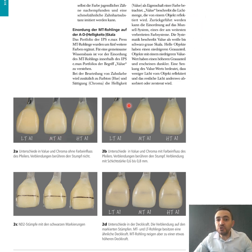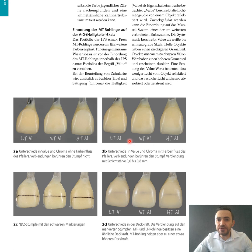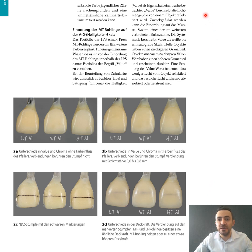In figure 2b, I pushed down those veneers to touch the stump completely, which is obviously a simulation of veneer insertion in the mouth. Now note the difference in brightness and chroma with the influence of the stump color from the background. See how MT has sustained the brightness level, while HT had the most influence from the stump.